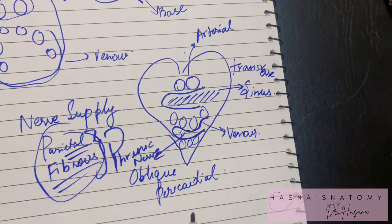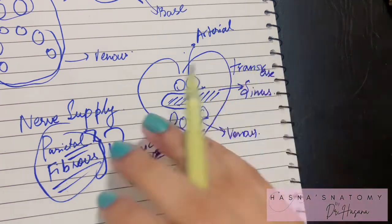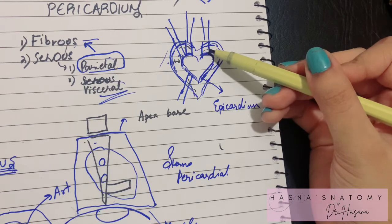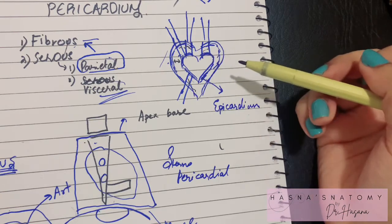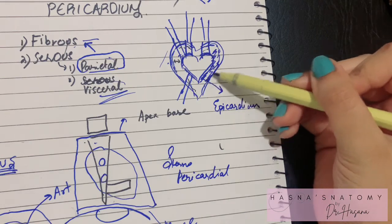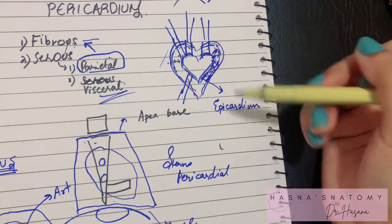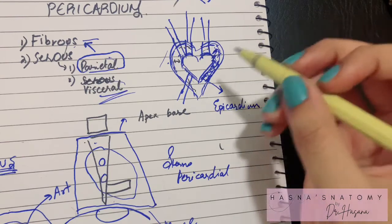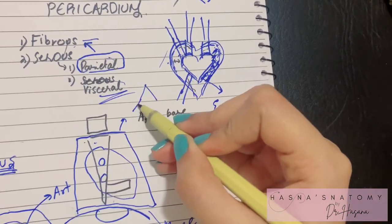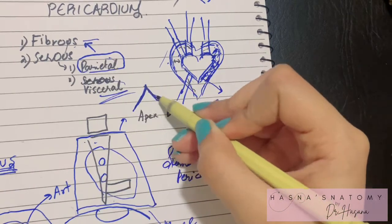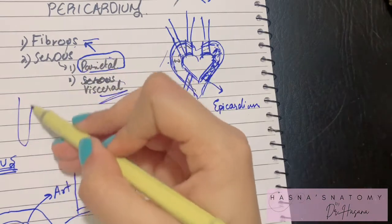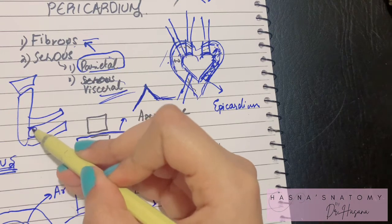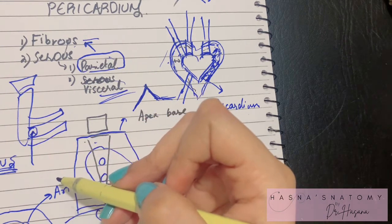Now for an important clinical point: when inflammatory fluid fills up in the pericardial cavity — the space between the parietal and visceral serous pericardium — drainage is required. This procedure is called pericardiocentesis and is carried out at the left fifth or sixth intercostal space, just lateral to the sternum.